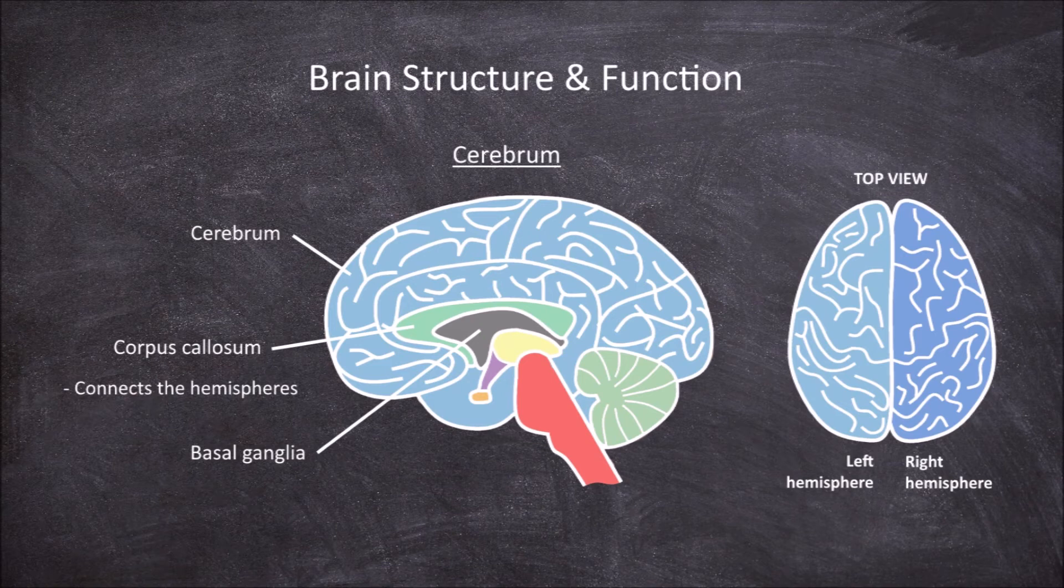The basal ganglia is made up of nuclei. The function of the basal ganglia is in motor control.